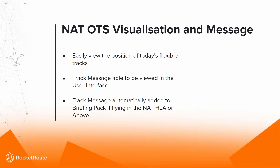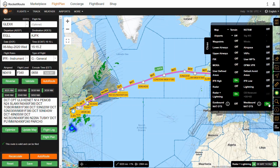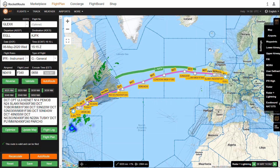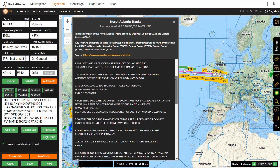The next improvement is the NAT OTS — the North Atlantic Organized Track System — visualization and track message. You can now easily view the position of the NAT OTS tracks and see the track message within the user interface. The track message is now automatically added to the briefing pack if flying in the NAT HLA — the high level or above. To enable this, go to Settings on the right-hand side, click either westbound or eastbound OTS, then click on the OTS route to view the track.